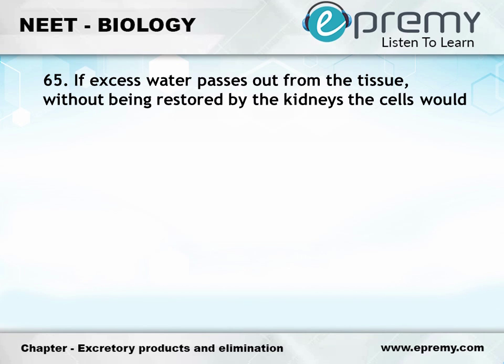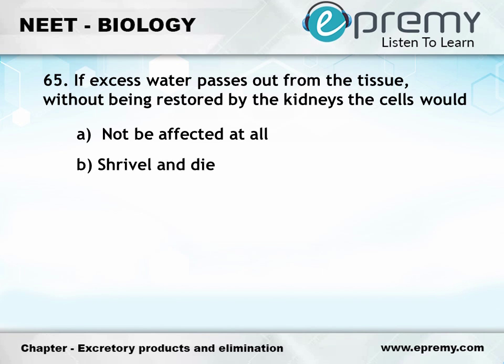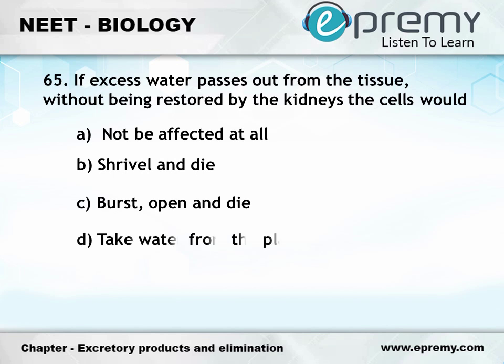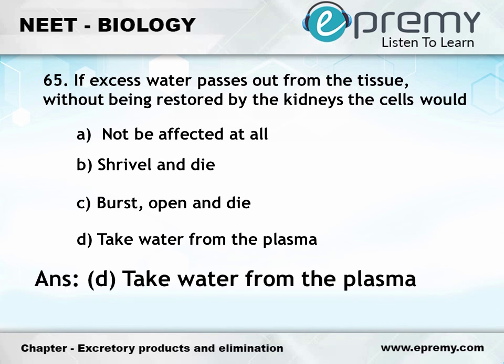Question number 65: If excess water passes out from the tissue without being restored by the kidneys, the cells would — Option A: Not be affected at all, Option B: Shrivel and die, Option C: Burst open and die, Option D: Take water from the plasma. The answer is Option D: Take water from the plasma.